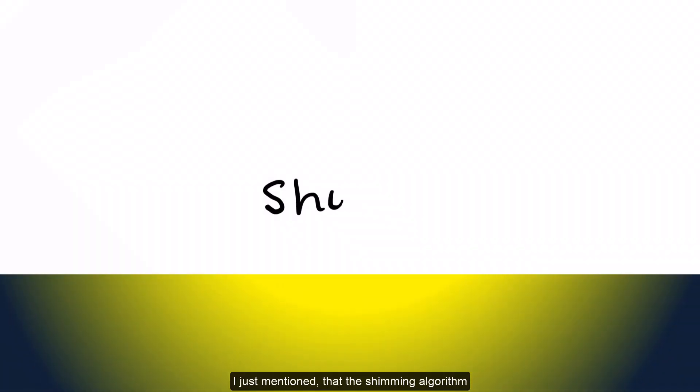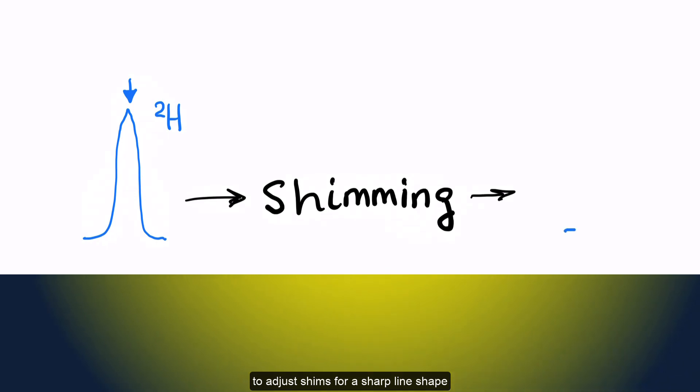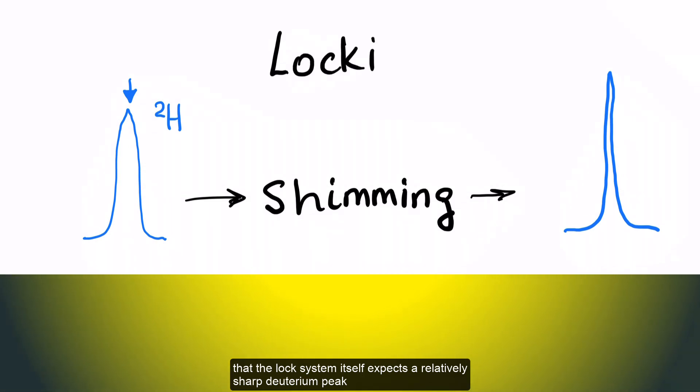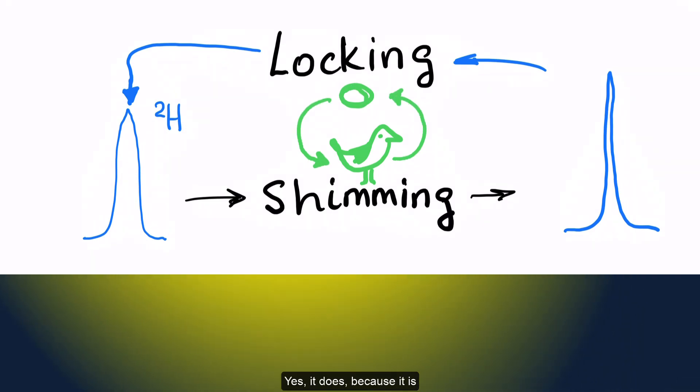I just mentioned that the shimming algorithm needs a locked deuterium signal to adjust shims for a sharp line shape. However, you may recall from previous episodes that the lock system itself expects a relatively sharp deuterium peak, which means that the shims should already be quite good. Does it look like a problem of a chicken and an egg? Yes, it does, because it is.